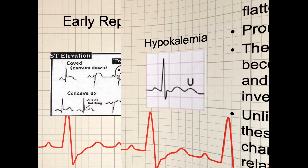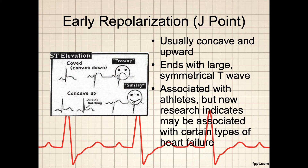Part of the process of reviewing the ST segment also involves reviewing the J-point, because the J-point can reveal early repolarization. Usually, the J-point is concave and upward and ends with a large symmetrical T wave. However, if it curves downward like a frown, this could indicate a problem. Although in the past it has been associated with athletic fitness, new research indicates that it may also be associated with certain types of heart failure.